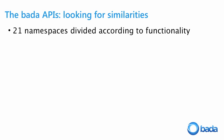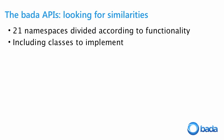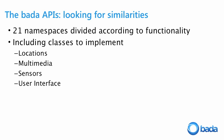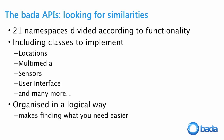Bada has 21 namespaces — it used to be a neat 20, but a new one was introduced in Bada 1.1. Because everything is organized into these 21 namespaces, it's very easy to find your way around. Once you know the namespaces, it's straightforward to find the particular API calls you want. They're organized in a logical way — or at least we think so.